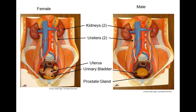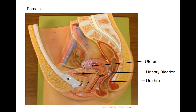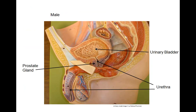The male does not have a uterus superior to the urinary bladder, but found sitting inferior is a prostate gland. The prostate gland in the male surrounds the urethra. Seen here is the sagittal plane of section of the female's pelvic cavity showing the uterus, urinary bladder, and the prostate gland that surrounds the urethra.